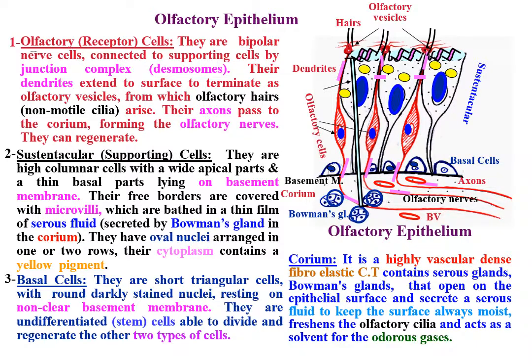The corium is a highly vascular dense fibroelastic connective tissue containing serous glands — the Bowman's glands — that open on the epithelial surface and secrete a serous fluid to keep the surface always moist, freshen the olfactory cilia, and act as a solvent for odorous gases.